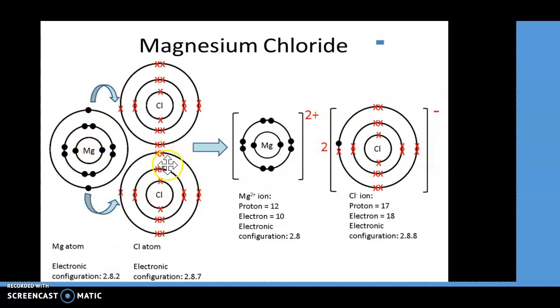Chlorine has electronic configuration of 17.